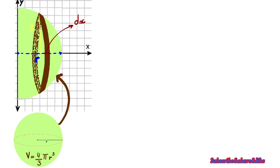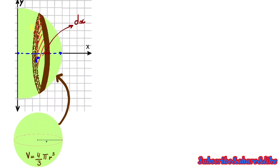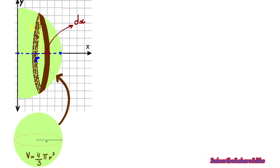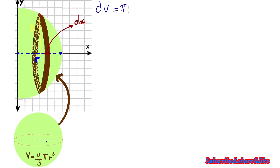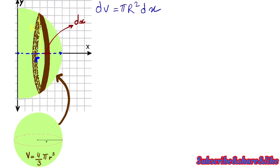The volume of this small cylinder is just the complete area multiplied by the height, and in this case the height is just dx. So let's find the volume of the small cylinder. We know that dV is just π r² dx. This is the formula.